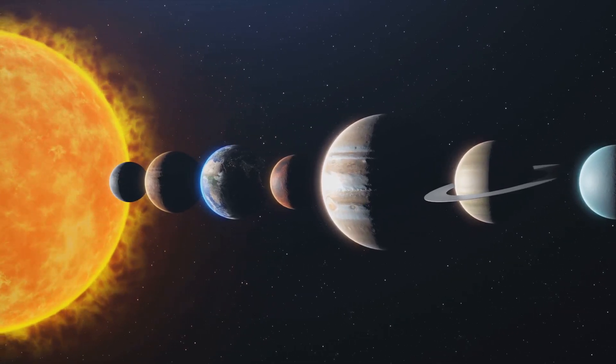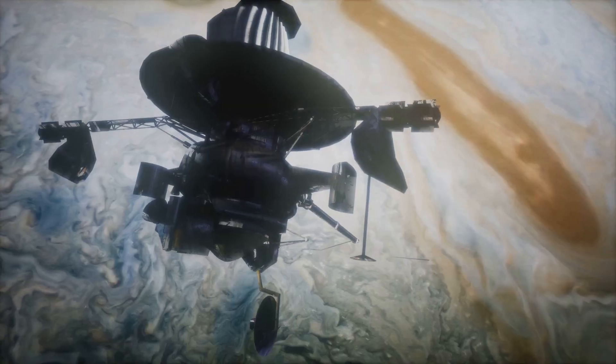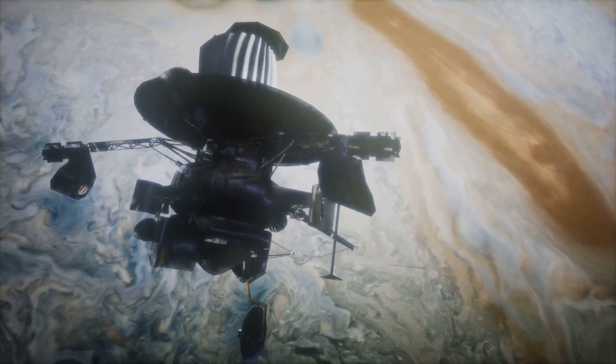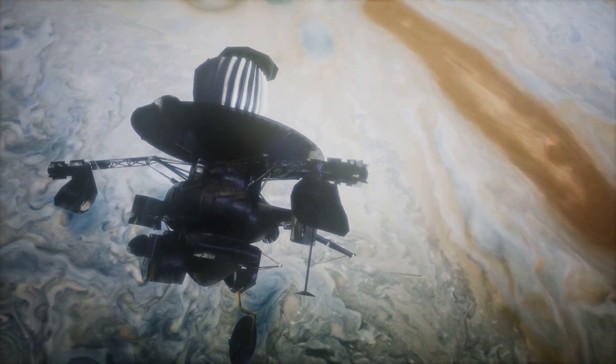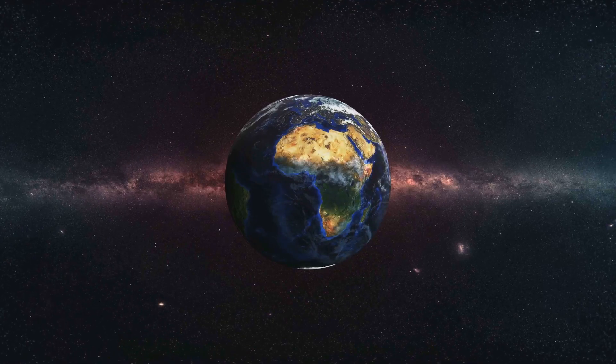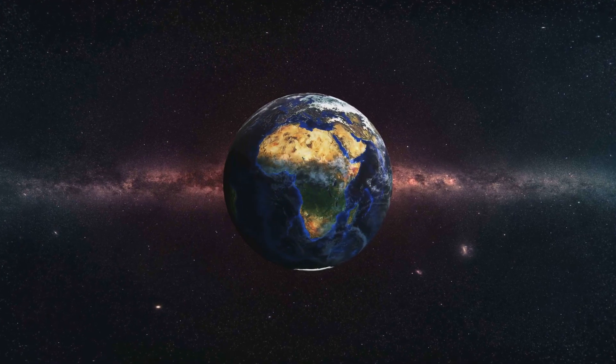The following century, Galileo Galilei took the baton. He bolstered the heliocentric theory by observing the moons of Jupiter through a telescope, proving that not everything in the universe revolved around the Earth.